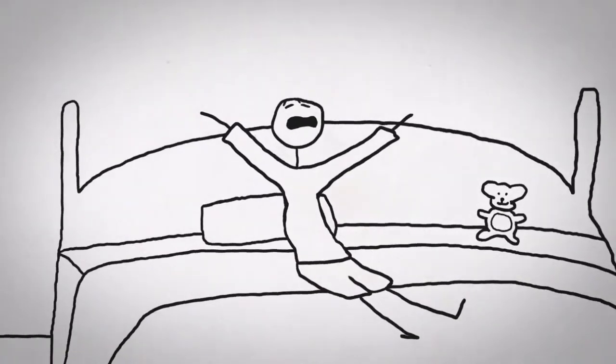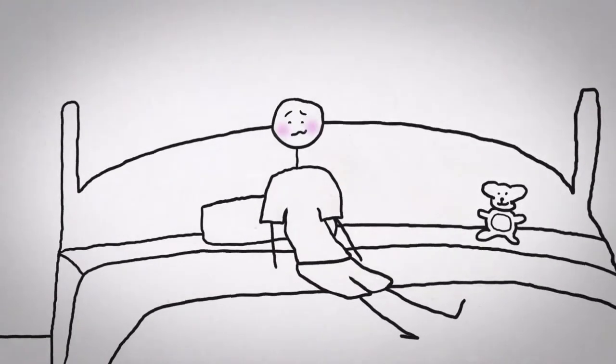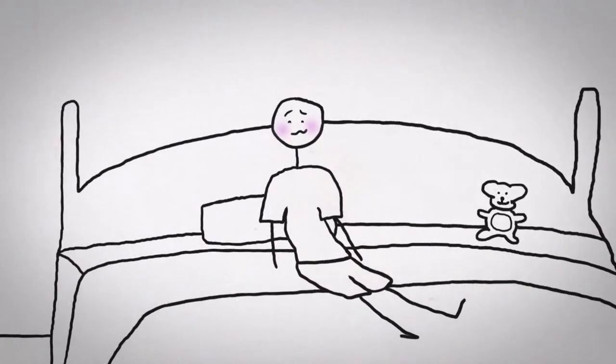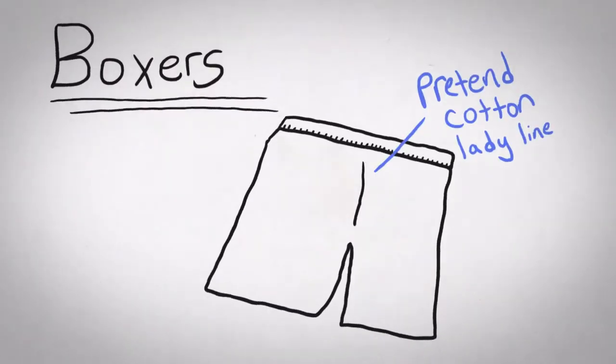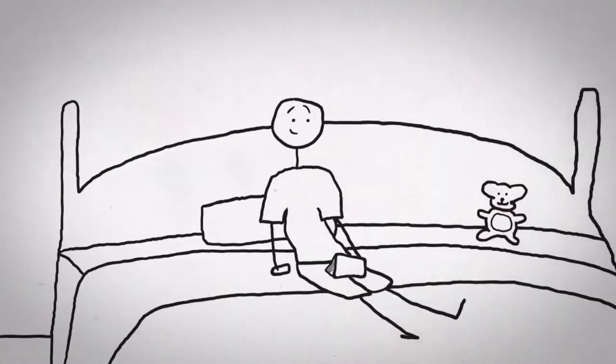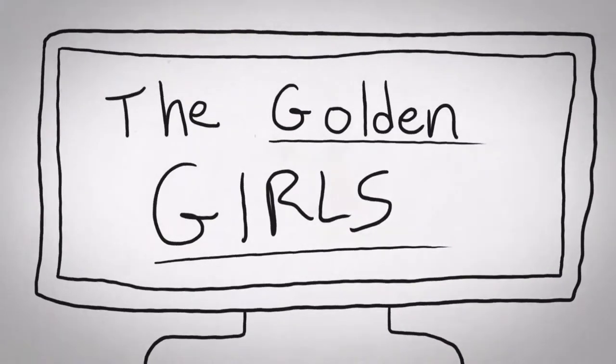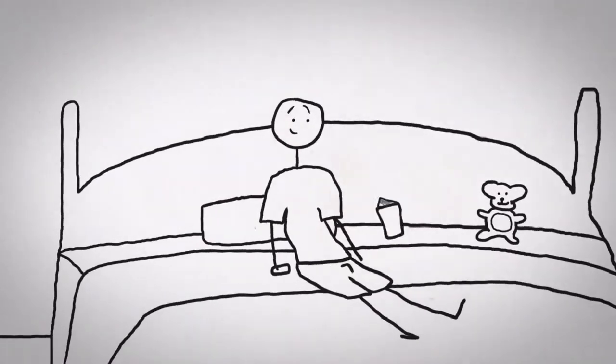So the other day I woke up with my boxers on backwards, and the way that you tell that boxers are on backwards is that boxers typically have like a vagina slit in the front, and that's presumably to give you more room just in case you're watching Golden Girls and you get a raging Bea Arthur boner.